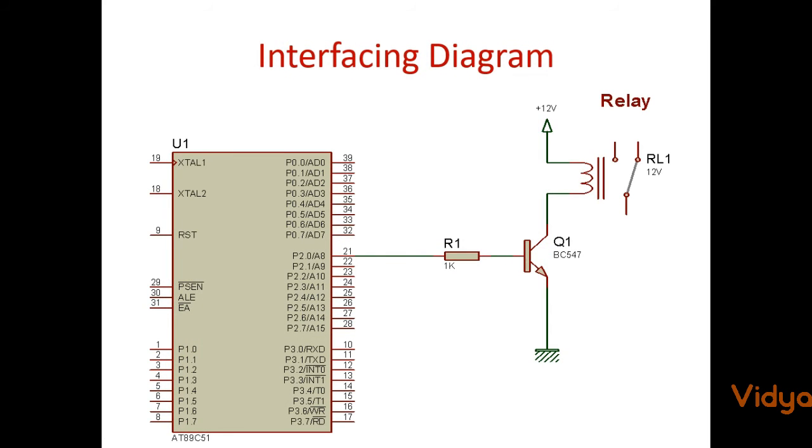Remember one more thing here: transistor is a current control device, so we have to give a current such that or we have to provide current so that it should not be more than 10 milliamperes going from base to emitter, and that is why connecting a resistor in series is very very important.